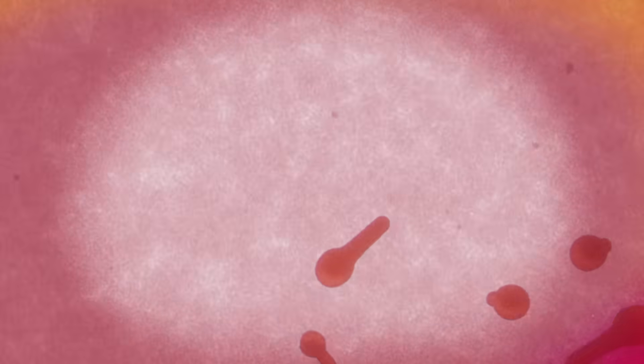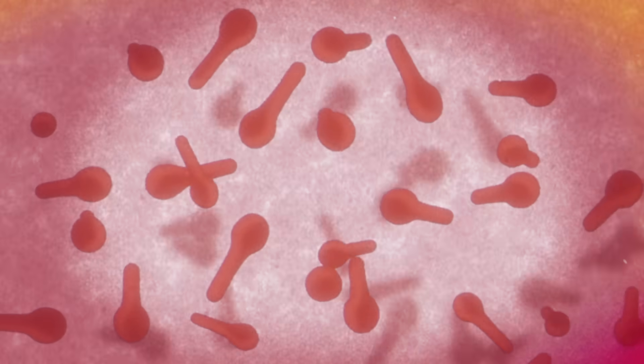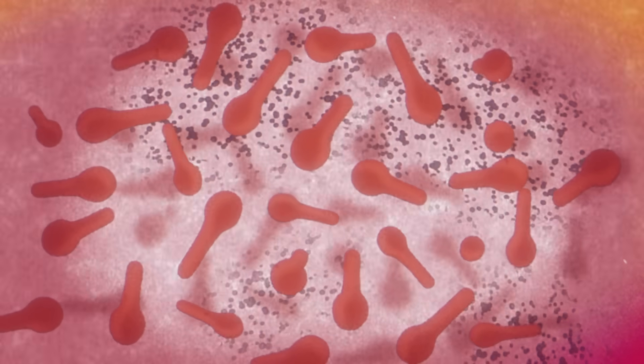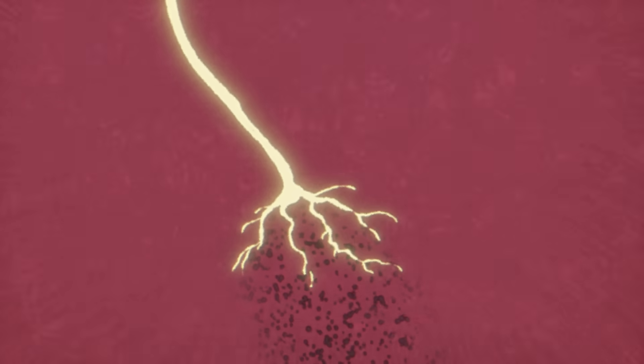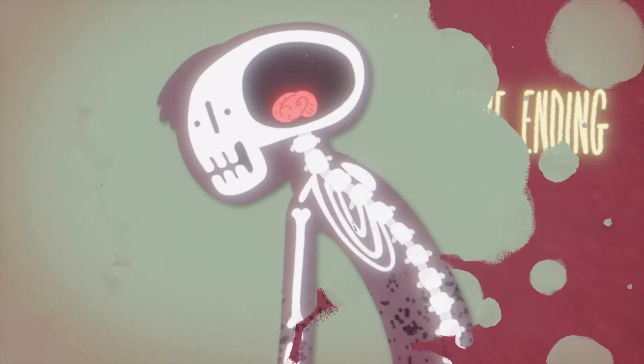Once in the body, the spores begin to germinate. This process releases several toxins, including deadly tetanus toxin. Nerve endings soak up this toxin, drawing it into the brain and spinal cord, where it wreaks havoc on interneurons.